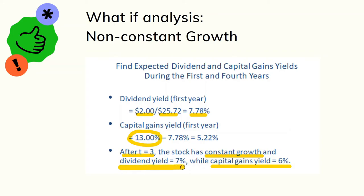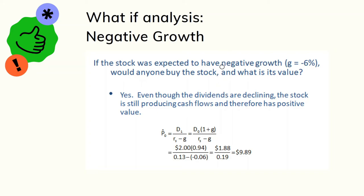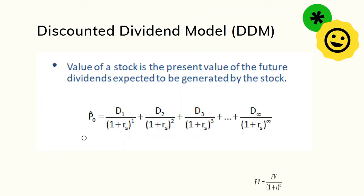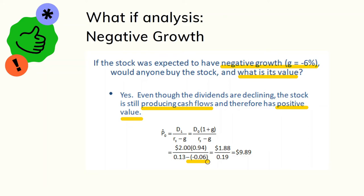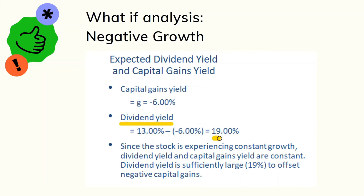The next example shows that even with a negative growth rate of 6 percent, the stock still has value. The answer is yes — as long as the stock produces cash flow, it has a positive value, since intrinsic value equals the present value of future cash flows. Here g = -6 percent, but the firm still pays dividends of $2.00, so the stock value is approximately $10. Total returns come predominantly from dividends, since capital gains yield is assumed to be negative 6 percent.